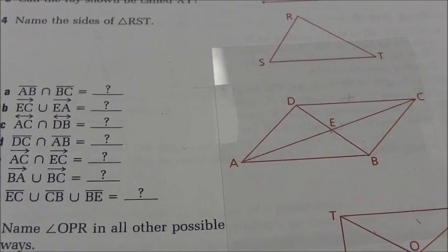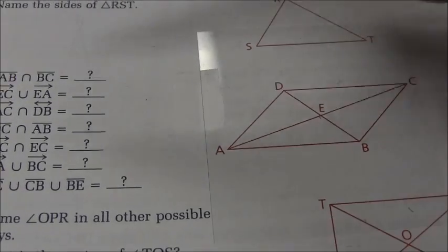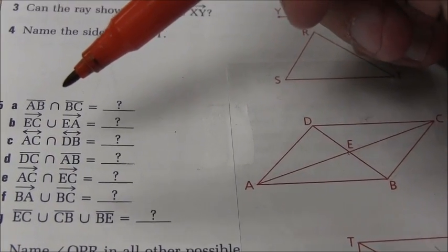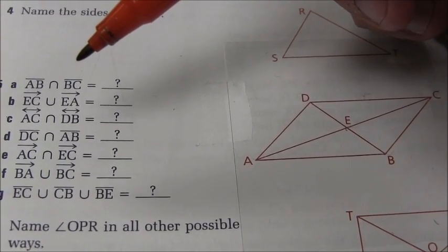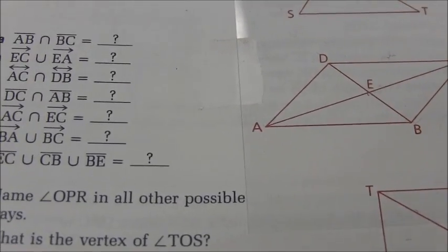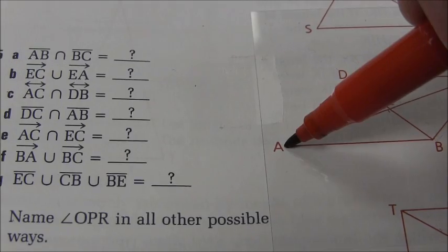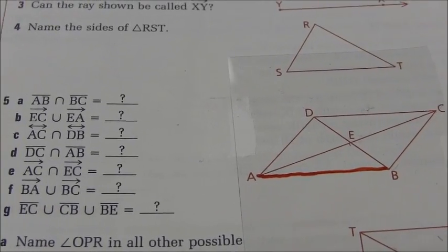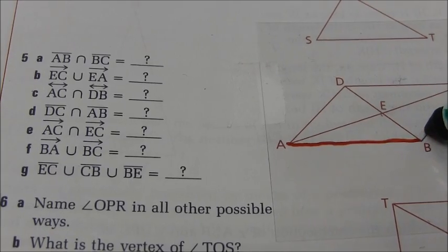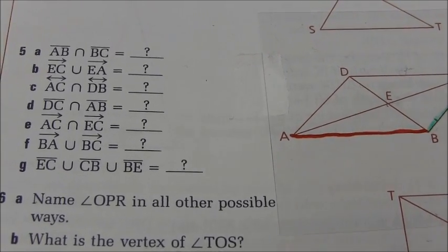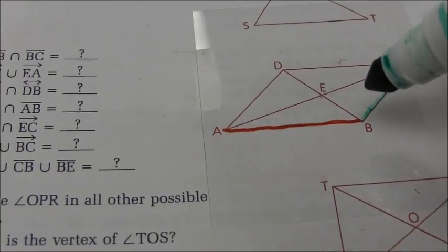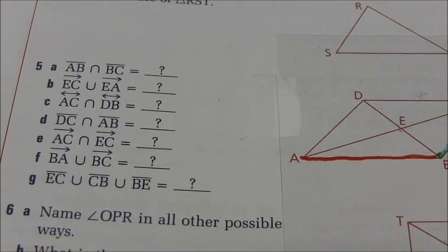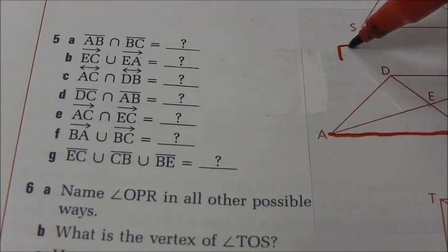Let's take a look at problem 5, part A. This is the intersection of segment AB and segment BC. You can see that intersection symbol there. Remember what that means - the overlap between those two segments, anywhere they cross each other. I'll trace segment AB along its length, then trace segment BC. Hopefully you can see the only place these two segments overlap is just at point B. So the correct answer for 5A is just point B.